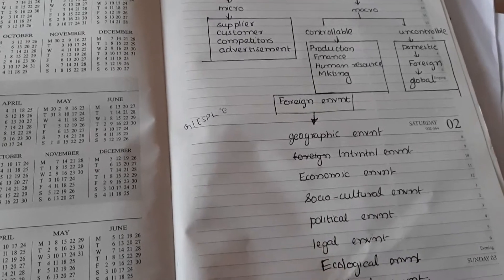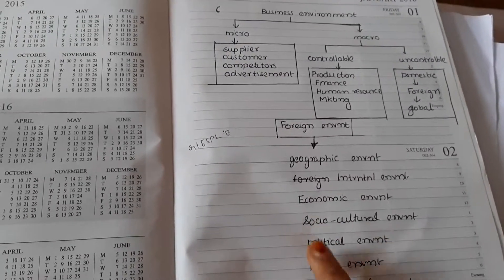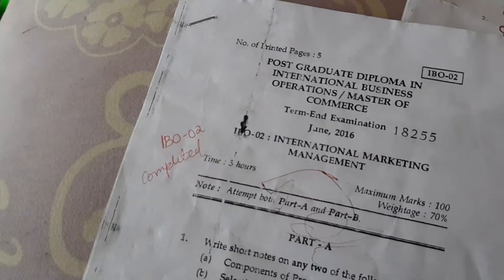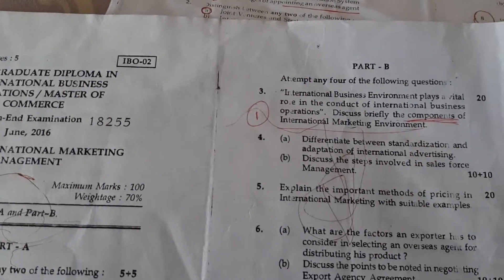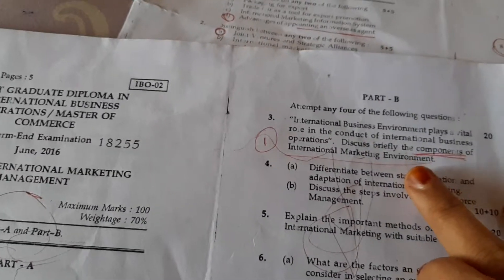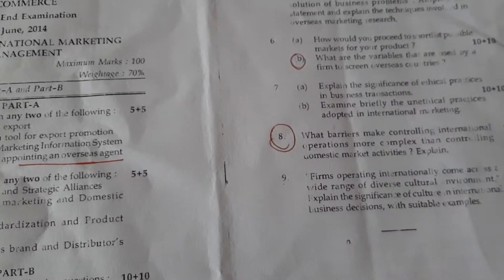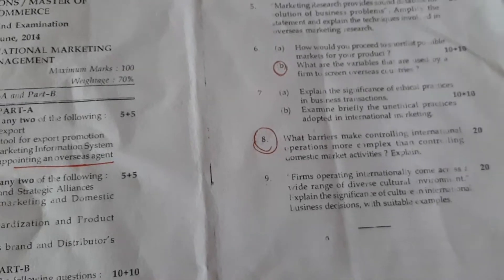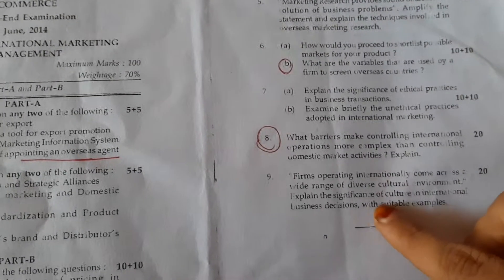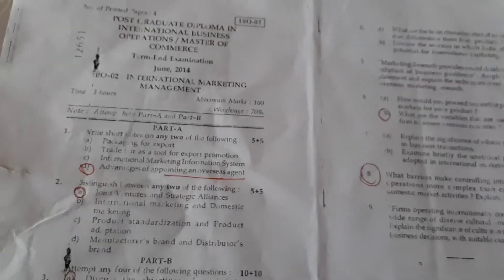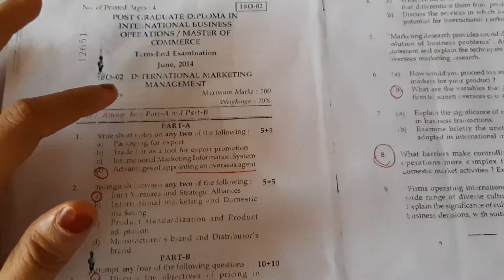Next, in 2016, look here it was asked: describe briefly the competence of the international marketing environment. Again the same. And see here, firms operating in international wide range of cultural environment - that is, here cultural environment definition, meaning it's a repeated question for IBO 002.